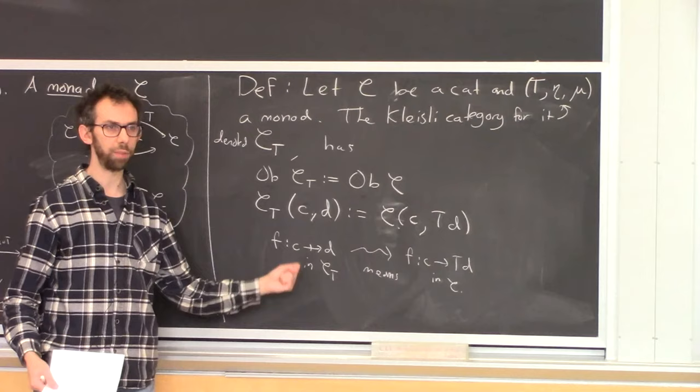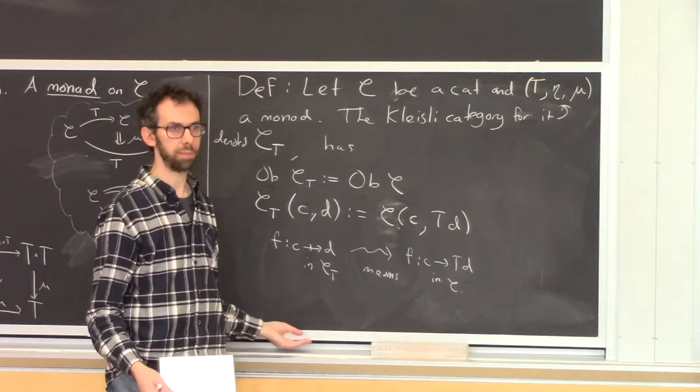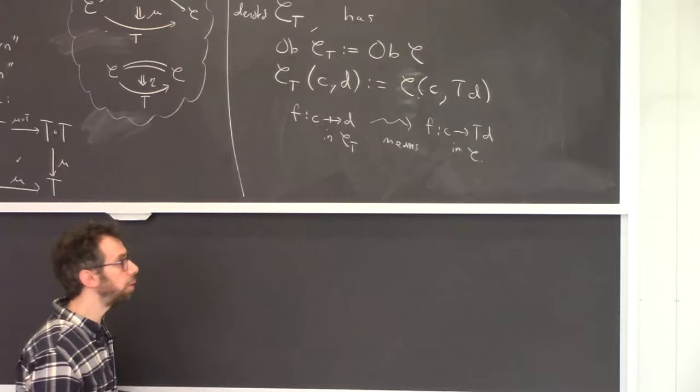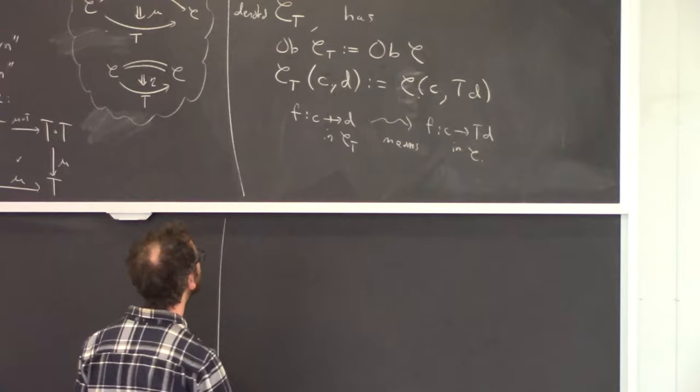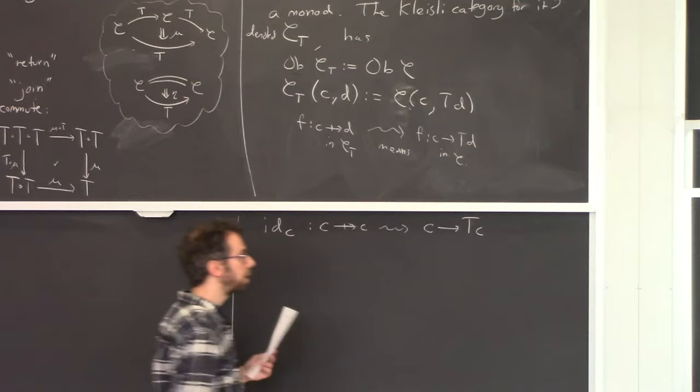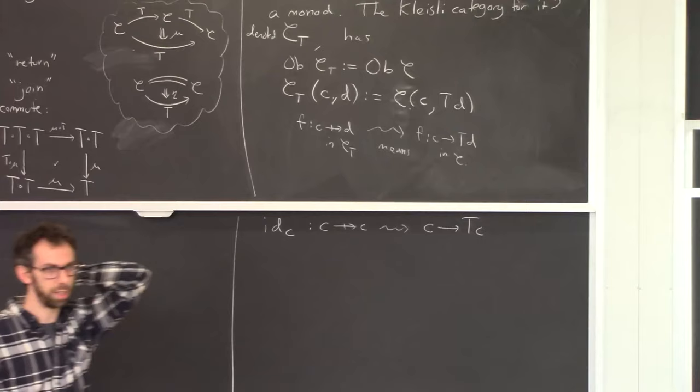This has a strange asymmetry: a morphism written from C to D in the Kleisli category unpacks into an asymmetric thing C → T(D). You might wonder what the identity morphism is. The identity on C has to be a map from C to T of C. If I want to give you an identity and I have a monad T, what should it be?